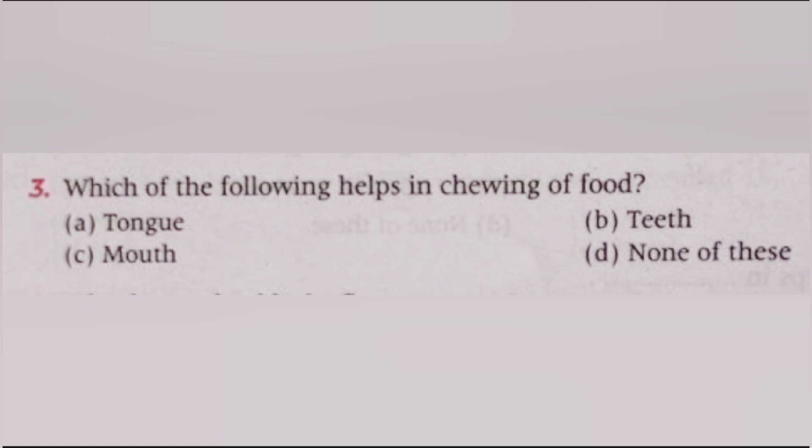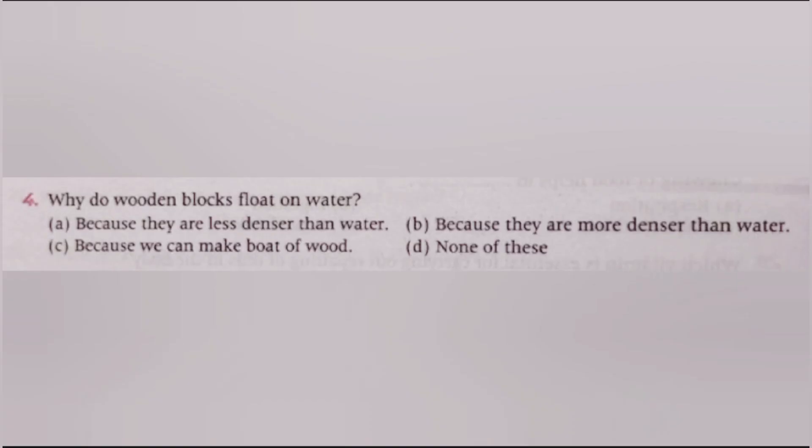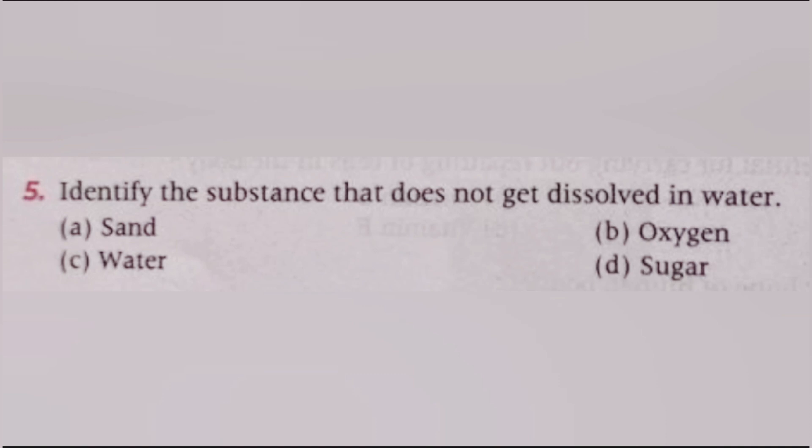Next, why do wooden blocks float on water? A, because they are less dense than water. B, because they are more dense than water. C, because we can make boats of wood. D, none of these. The answer is A, because they are less dense than water.